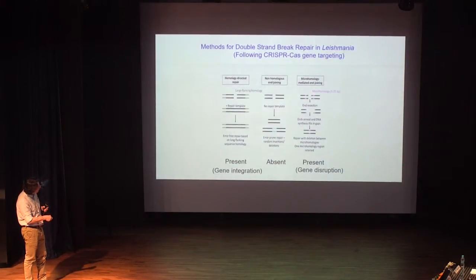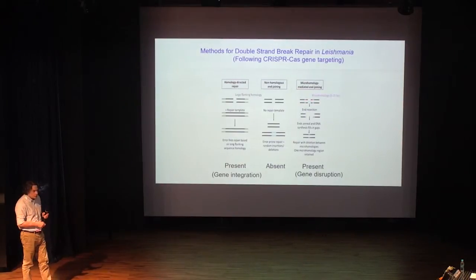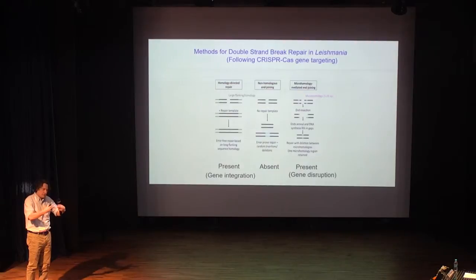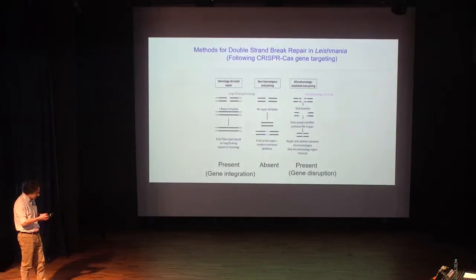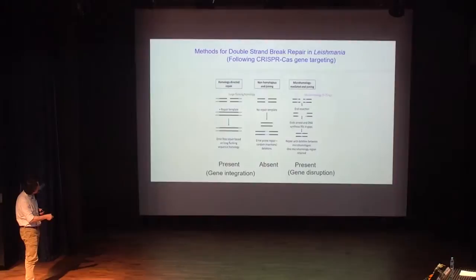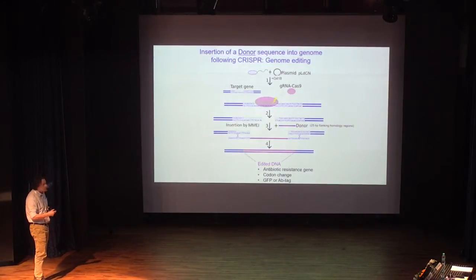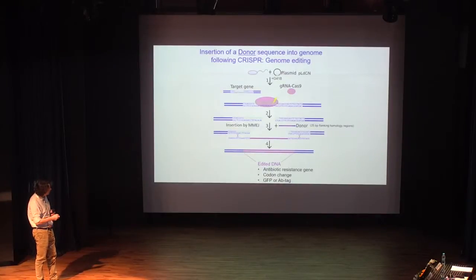That was an important result because it showed that the mechanism of repair in leishmania is micro-homology end joining. It looks for homologous sequences within the same chromosome and uses that to repair the chromosome. So now when you cut the DNA, it attaches the chromosome through homologous sequences. Instead of having to look for these sequences to repair, one of the things you can do is add in a donor sequence.